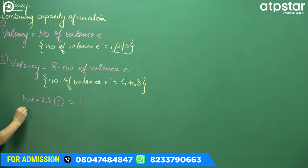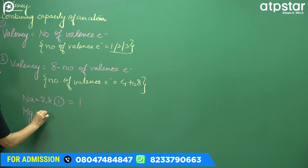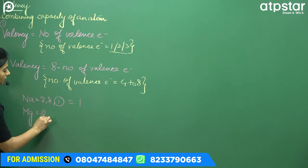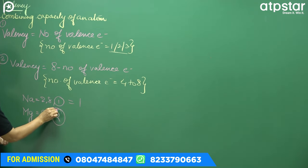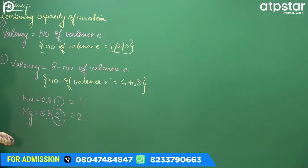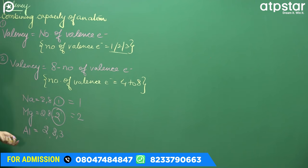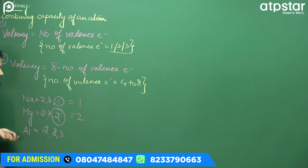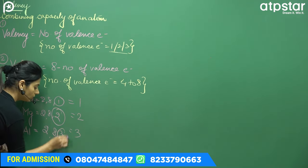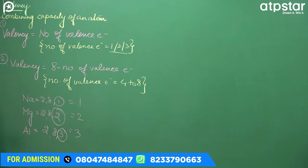Magnesium — configuration: 1s², 2s², 2p⁶, 3s². Simple configuration: 2, 8, 2. How many valence electrons? 2. So valency is 2. Aluminium — configuration: 3s², 3p¹. Simple configuration: 2, 8, 3. How many valence electrons? 3. So valency is 3.